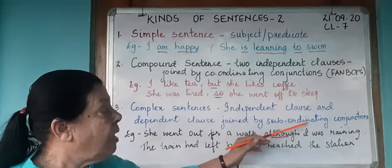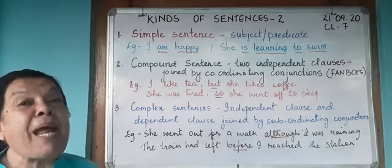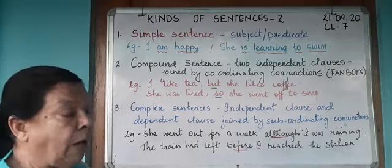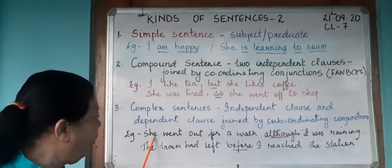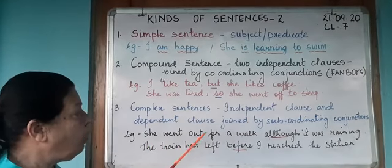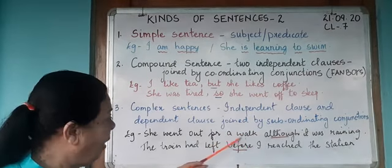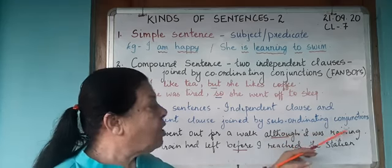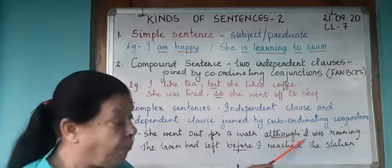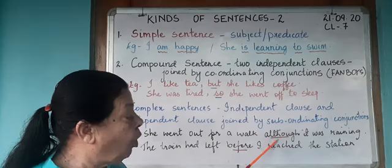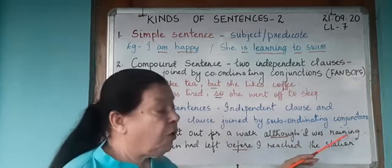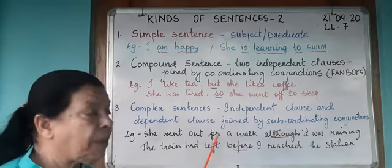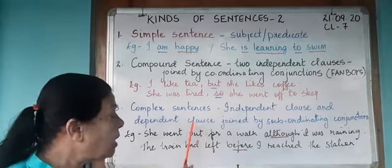Because they depend on another sentence. For example: Although it was raining, she went out for a walk. 'She went out for a walk' is my independent clause — 'she' is the subject, 'went out for a walk' is the predicate, and this group of words makes complete sense. Now look at 'Although it was raining' — 'it' can be the subject, 'was raining' is the verb — but because of the word 'although,' this group does not give complete sense on its own. So this is the dependent clause, and 'although' is the subordinating conjunction.